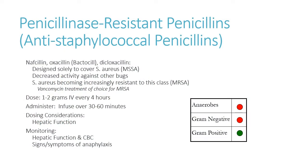Remember how penicillins work as a class: they have a beta-lactam group that mimics portions of the peptidoglycan walls on bacteria and more specifically inhibits the penicillin binding protein, which is responsible for making cross-linkages within the cell wall. By inhibiting that enzyme, you prevent the wall from being made, integrity goes down, the wall opens up, and you lyse out the bacterial contents. So penicillins are bactericidal — they kill bacteria.